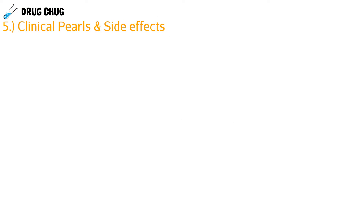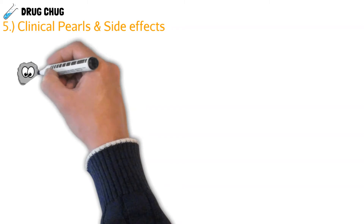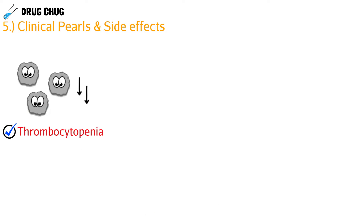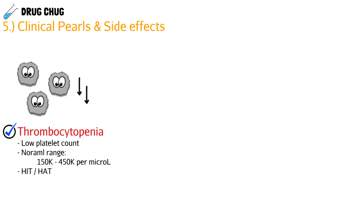Let's talk about clinical pearls and side effects. The first is thrombocytopenia — a very low platelet count. Normal range is 150,000 to 450,000 platelets per microliter. A serious complication is HIT (heparin-induced thrombocytopenia), sometimes called HAT, which is an autoimmune reaction where the immune system attacks platelets. This is more common with regular heparin; the risk is lower with low molecular weight heparins, but it still must be monitored.